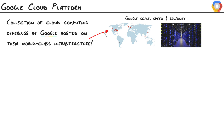What's so impressive about that is their network is the biggest and fastest on Earth. It spans the globe. All these data centers are connected by dark fiber. And when we talk about scale, speed, and reliability, we're talking about Google scale, speed,